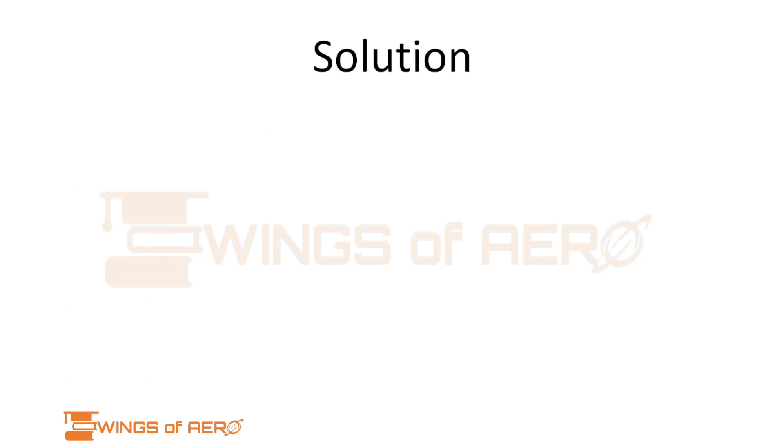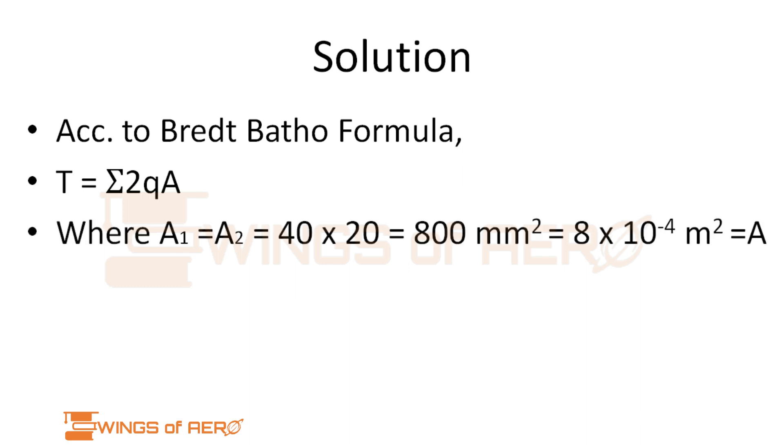Let's figure out the solution. According to the Bredt-Batho formula, we know T equals sigma 2qAe. Here we are using a multi-cell structure. We can recall the area a1 equals a2 as per the given figure. We can denote that a1 equals a2 equals a, that is equivalent to 8 into 10 power minus 4 m².